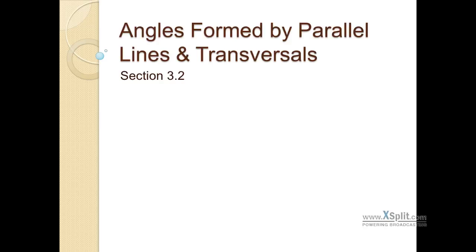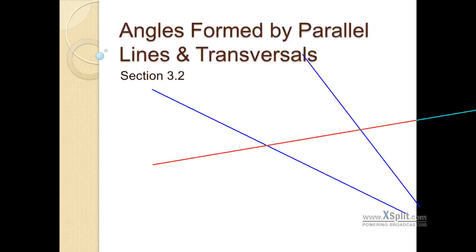Remember last time we had a few definitions, let's go ahead and refresh what they are. If we have two lines and they're being cut by some transversal, we have a bunch of pairs of angles.